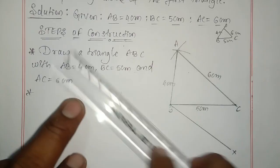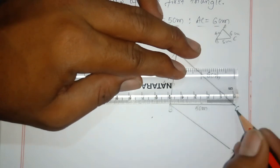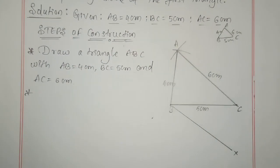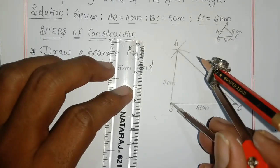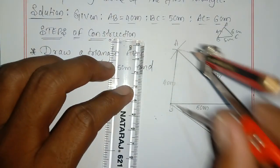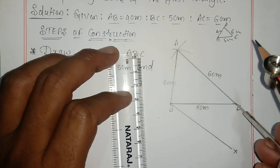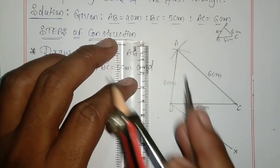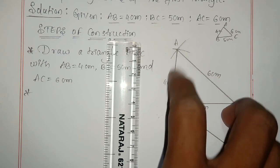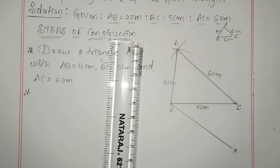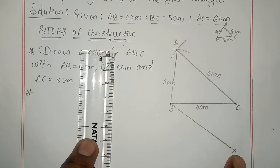First, draw line segment BC equals five centimeter. Next, with the help of compass take four centimeter. From B point, draw one arc. From C, take six centimeter and draw another arc to cut the first one. Join C to A and B to A. Then you get triangle ABC.